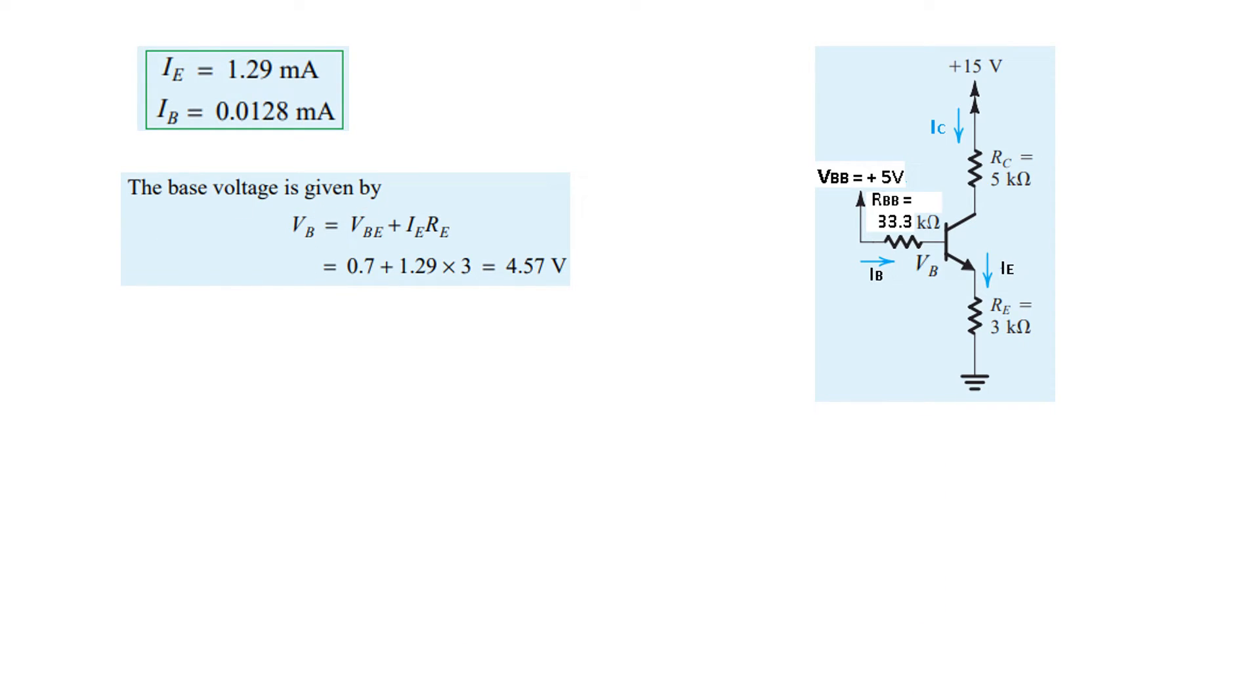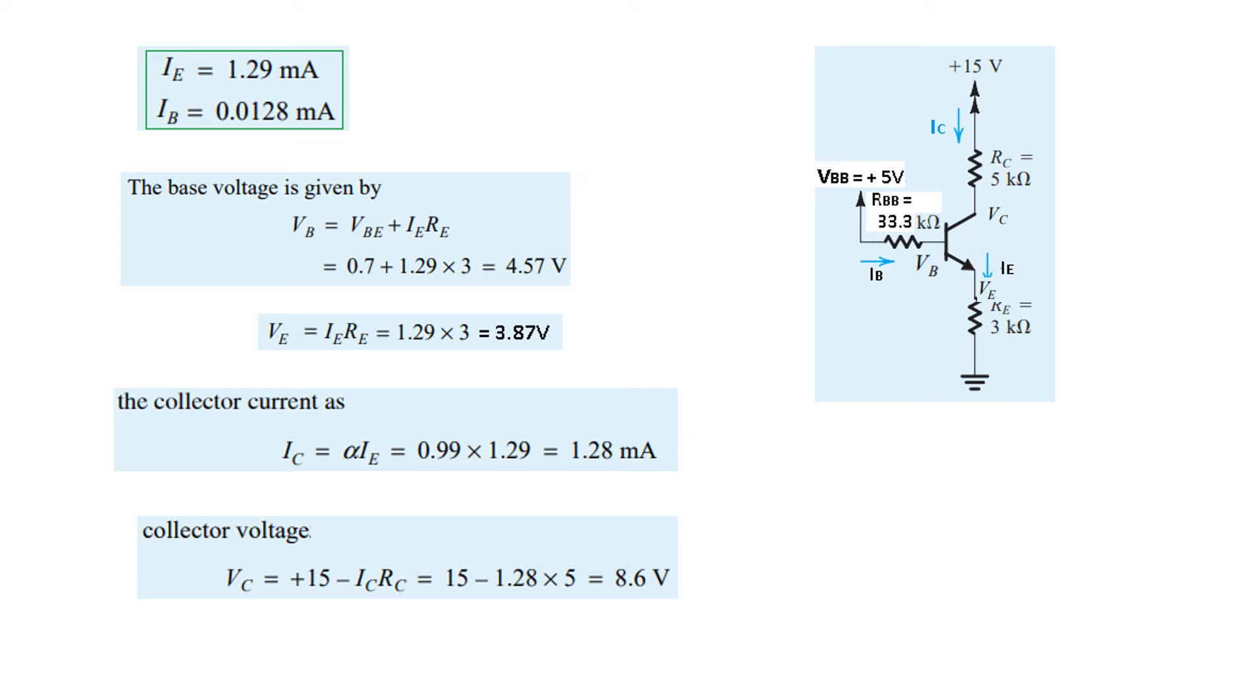The base voltage Vb = Vbe + Ie*Re = 0.7 + 1.29×3 = 4.57 volts. This voltage here is 4.57V. If we know this voltage, we can find Ve because Vb - Vbe gives Ve. Either calculate it as Vb - Vbe, or since we know the current, Ie*Re gives the voltage, which is 3.87 volts for Ve.